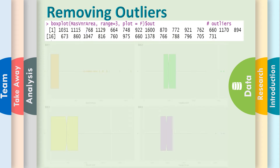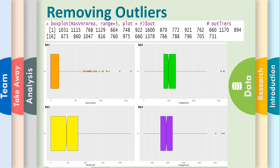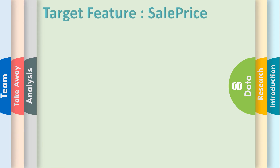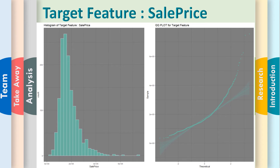Removing outliers using the boxplot function. The histogram of the target feature shows skewness. I now pass on to Janet for further analysis.